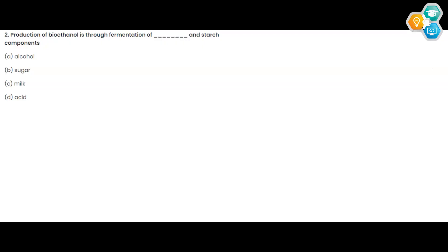Hello everyone, so today's question is: production of bioethanol is through fermentation of blank and starch components. Our first option is alcohol, second option is sugar, third option is milk, and the fourth option is acid.